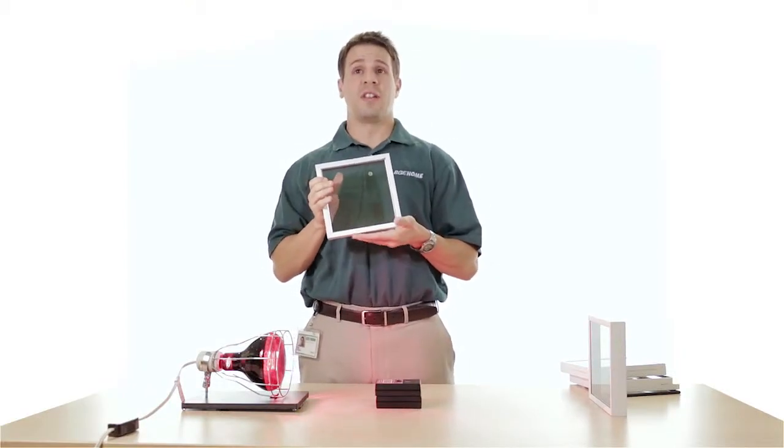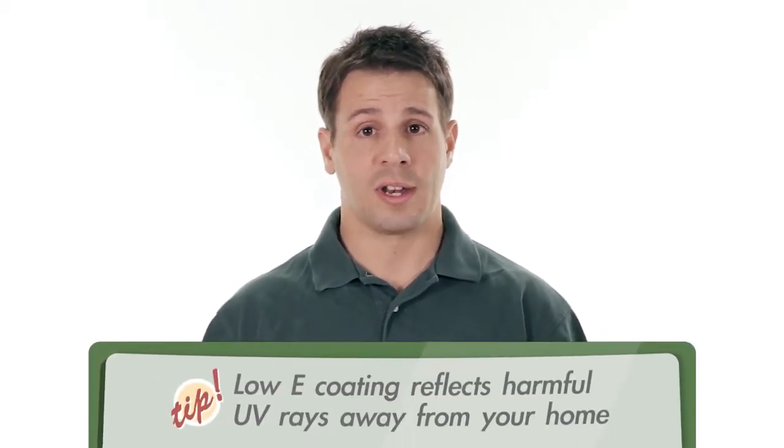This is a double pane glass. It's an insulated double pane glass. This would be two panes of glass in your window with a coating called low E and an argon gas filled in between.